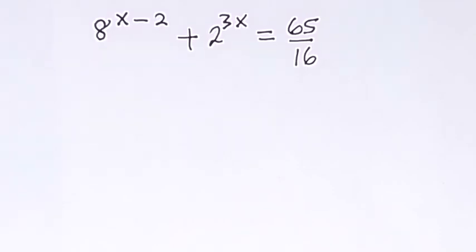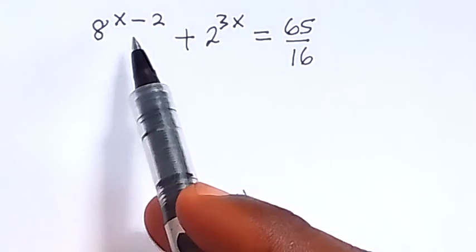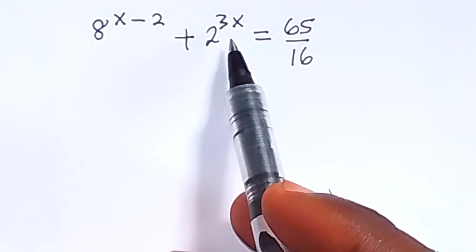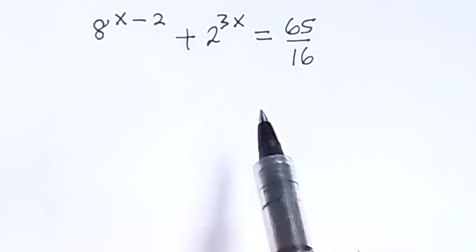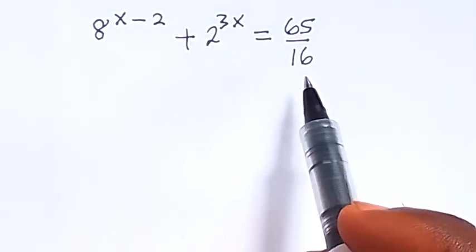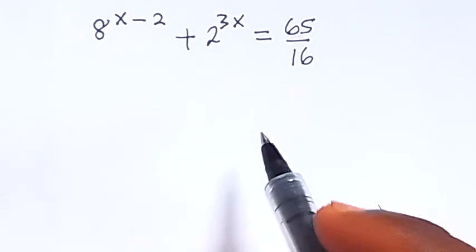Hello. How to solve this problem? 8 raised to power x minus 2, plus 2 raised to power 3x, equals to 65 over 16.